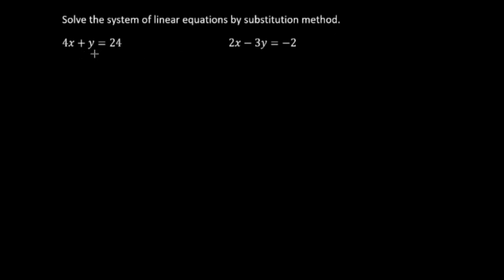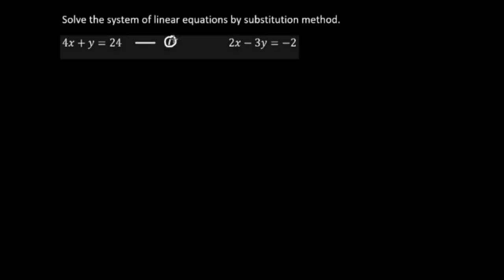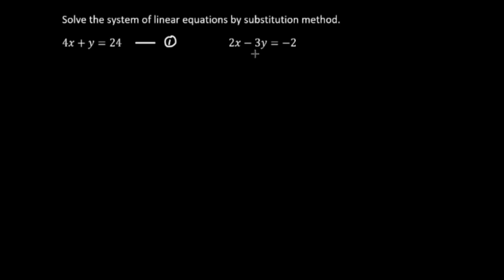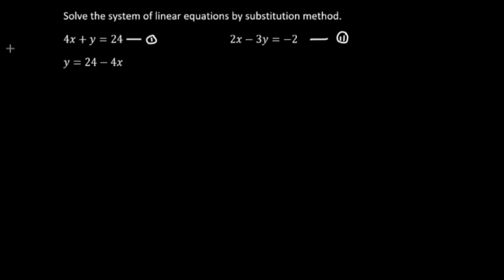The first equation is 4x plus y equals 24, which we call equation 1. The second equation is 2x minus 2y equals negative 2, which we call equation 2.